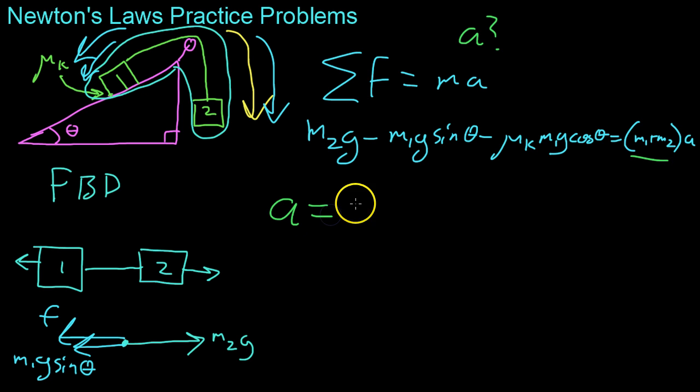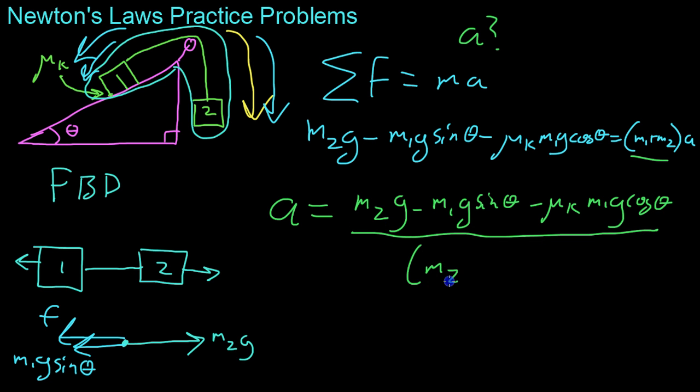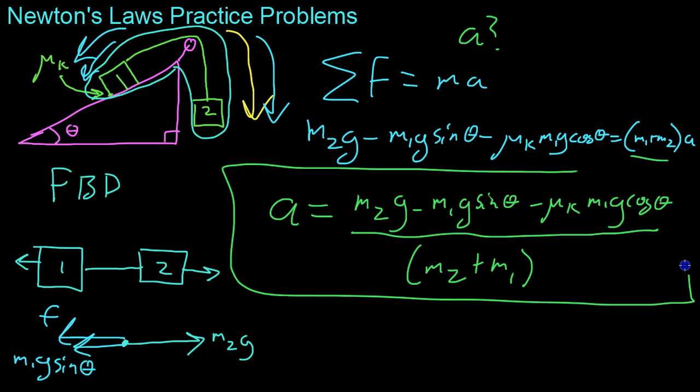So, you end up with acceleration equals M2G minus M1G sine of theta minus mu K, M1G cosine theta, all over the sum of the two masses, M2 and M1. And that's how you get your acceleration. And then, if you measure the acceleration, you can solve for the coefficient of friction.